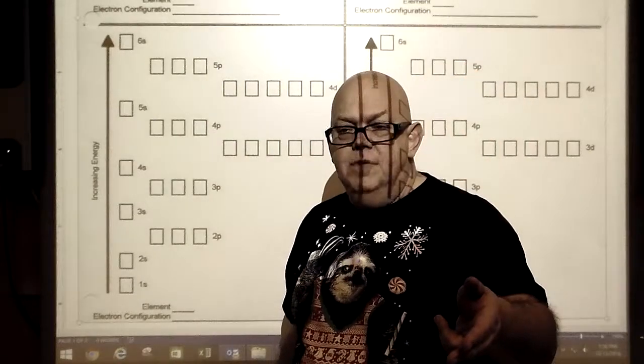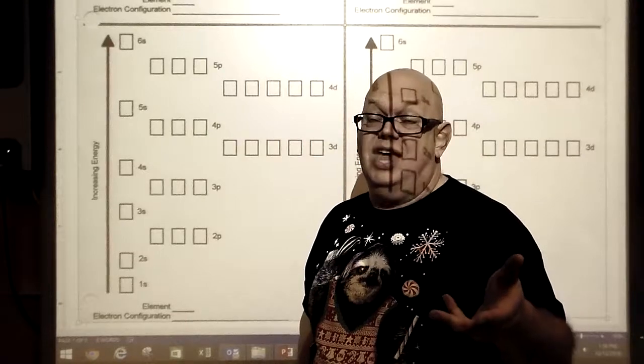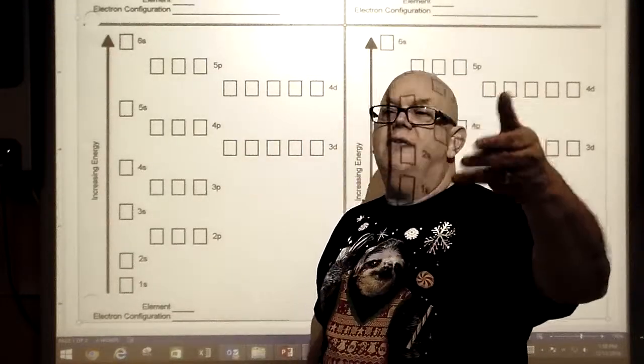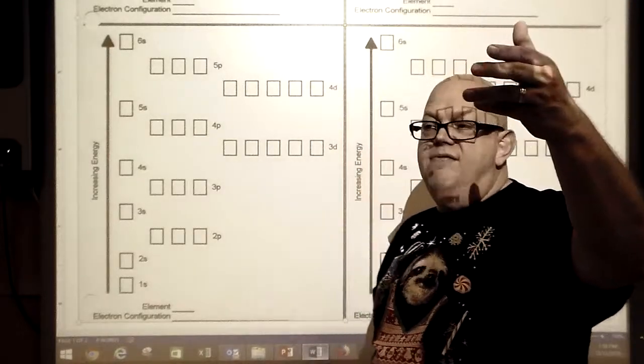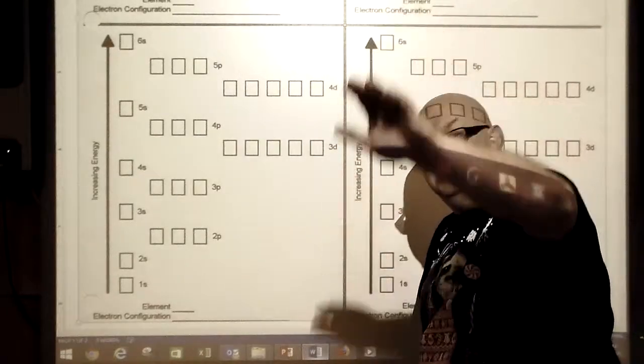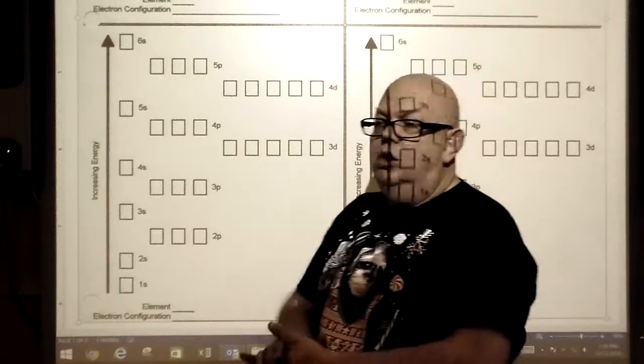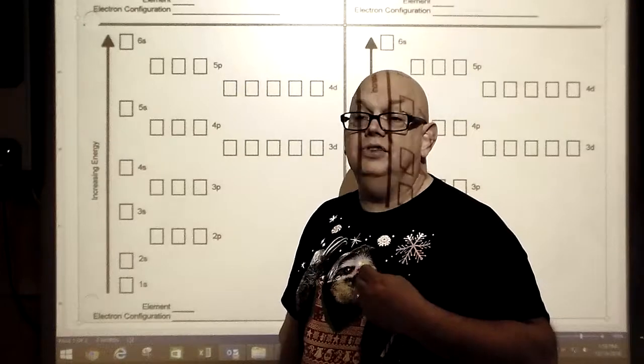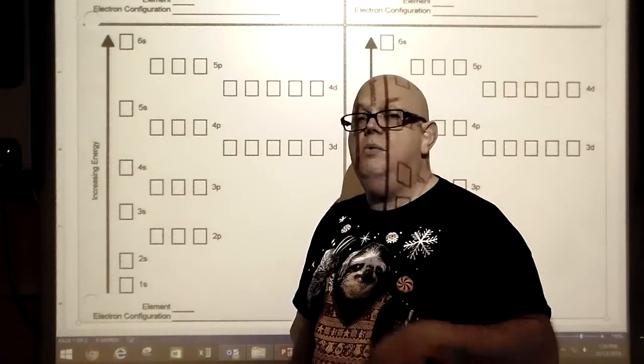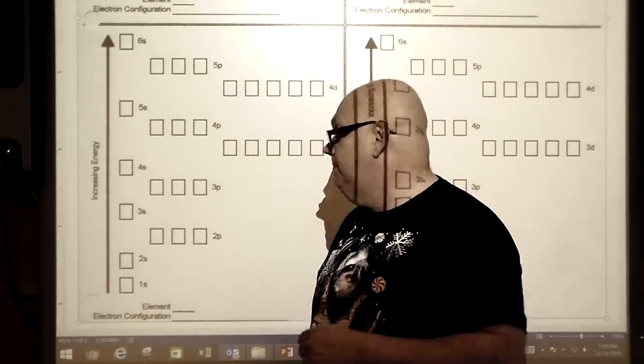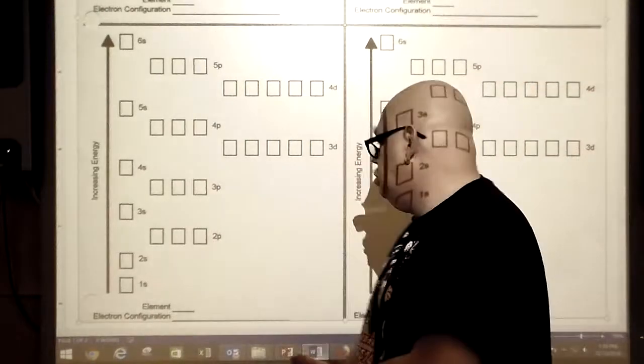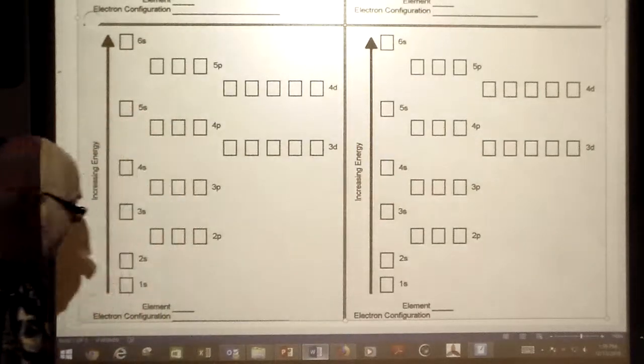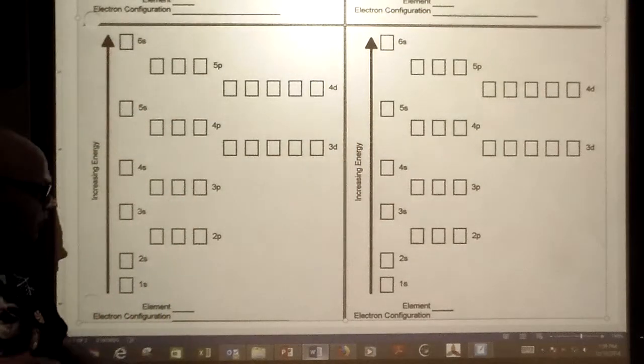If electrons pick up energy from an outside source, they jump to a higher energy level, a higher sublevel. When they come down, as they make their way to find the lowest energy level possible, they give off energy which results in some kind of light or infrared or ultraviolet radiation.